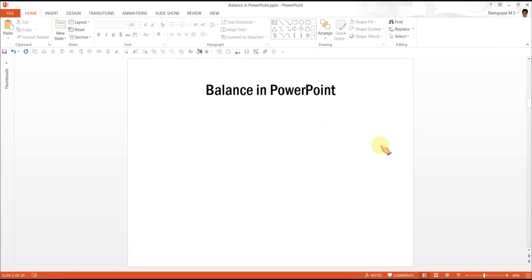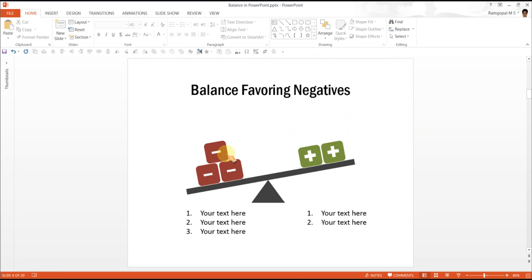If you observe closely, the diagram has three components. One is the plank, second is the fulcrum or the center point, and the third is some kind of icons to represent positive and negative factors.